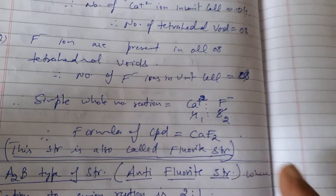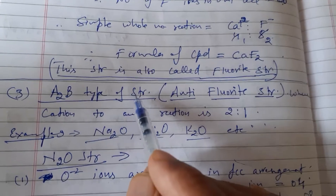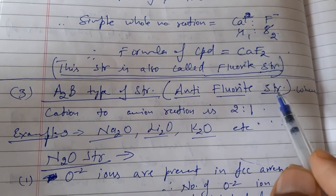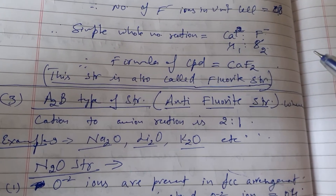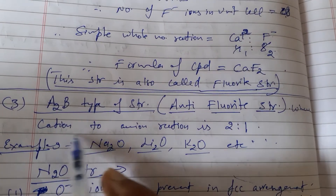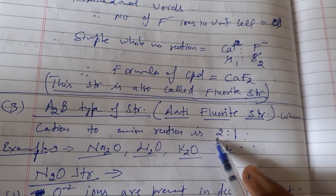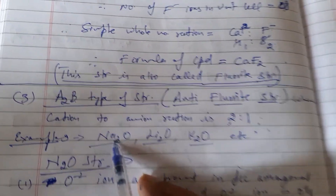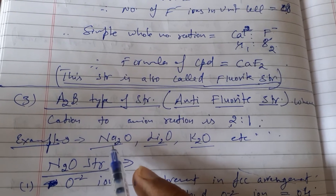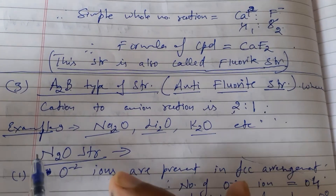The third type of structures in ionic compounds is the AB₂ type, specifically called anti-fluorite structures, because in these structures the arrangement is the complete reverse of the fluorite structure. The cation to anion ratio is 2:1, meaning two cations per one anion. Important examples to remember are the alkali metal oxides: lithium oxide, sodium oxide, and potassium oxide.